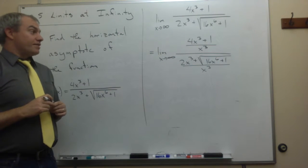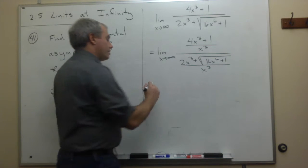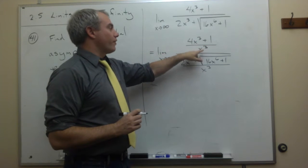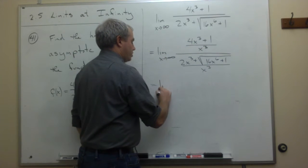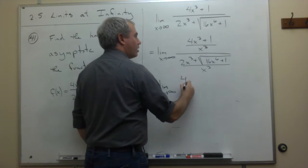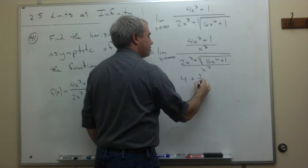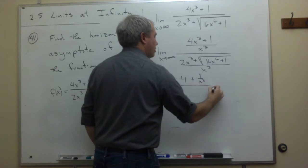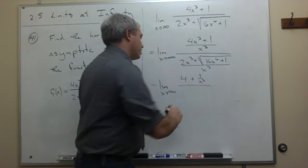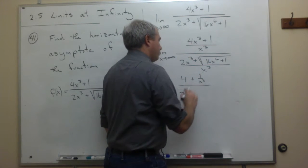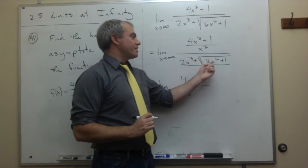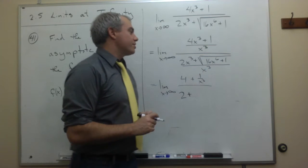Now let's simplify. The top is easy: 4x³/x³ gives us 4, so the numerator becomes the limit as x goes to infinity of (4 + 1/x³). On the bottom, 2x³/x³ gives 2, plus the term √(16x⁶ + 1) divided by x³.